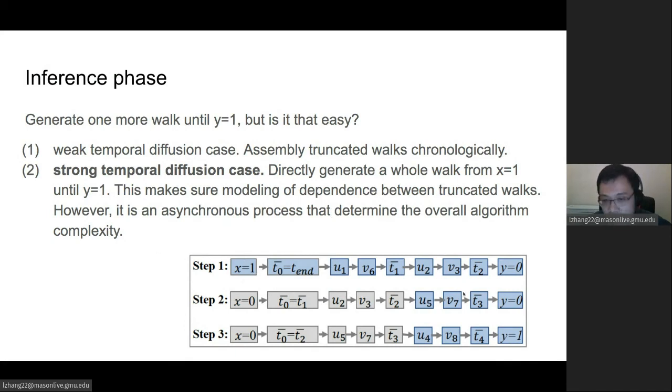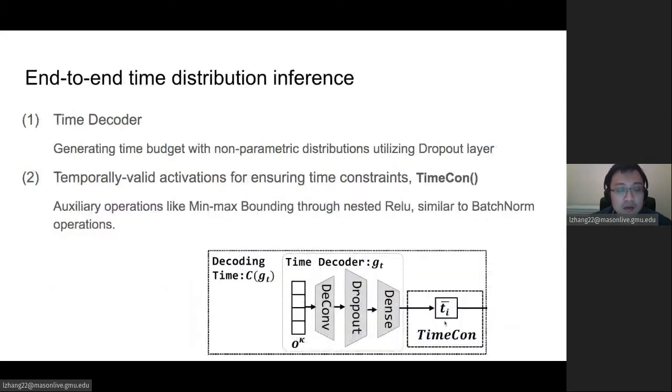However, this is an asynchronous process that determines the overall algorithm complexity. Because the length of different generations from X equals one to Y equals one is different, you cannot do it in parallel. You can only do it step by step.